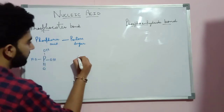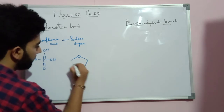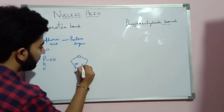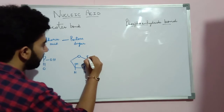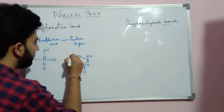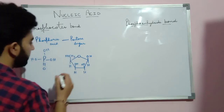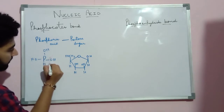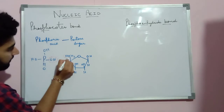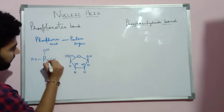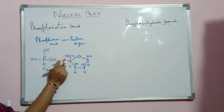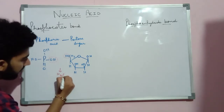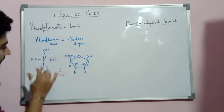This is the structure of phosphoric acid, and this is the structure of the sugar — deoxyribose sugar, which we will consider here. This is H and OH, H and CH2OH. How does this bond formation take place? The bond will form between this OH group and this carbon. Out of these two OH groups, a water molecule (H2O) releases out, and the bond forms.